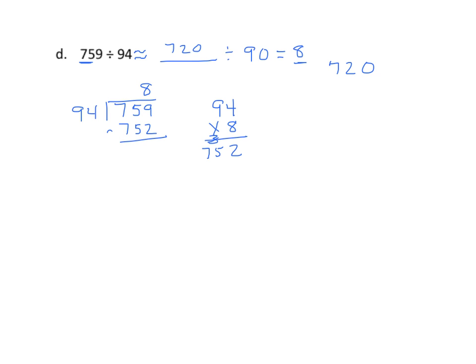We see that the 752 is less than the 759. So we'll put our 8 in the quotient. Now we subtract. Very simple. We get a 7. And of course, we cannot get any 94s out of a 7. So we're done. We'll put a remainder of 7.